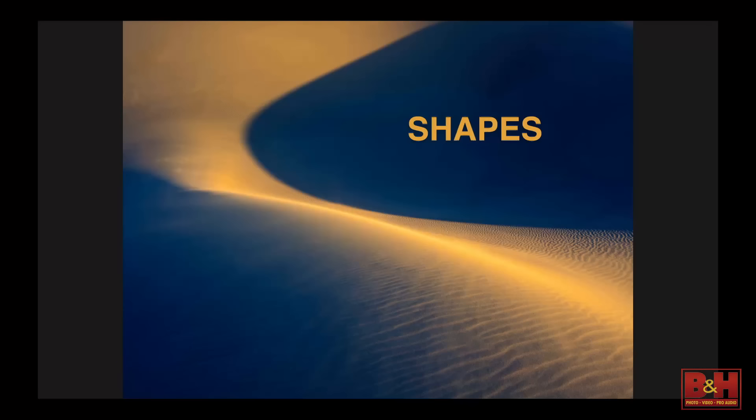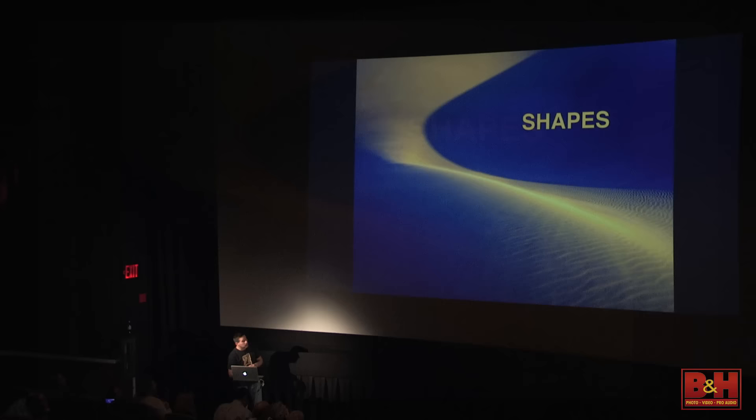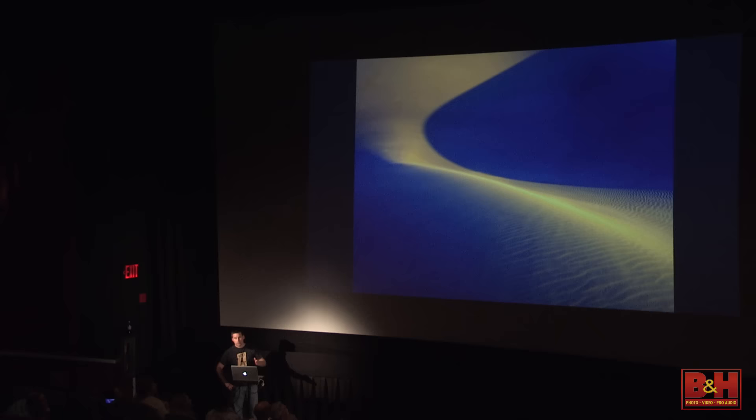Speaking of shapes — this is the next compositional tool. When you're looking at elements of the scene, you've got to think about the shapes they form or imply. For this shot of a sand dune at sunrise in Death Valley National Park, the shape was created by the interaction of light and shadow, and also by the contrast in color — the golden light of sunrise versus the deep blue shadows surrounding it. The shape was not a literal physical object; it was created briefly by the interaction of color and light. For this particular shot, the shape itself became the composition.